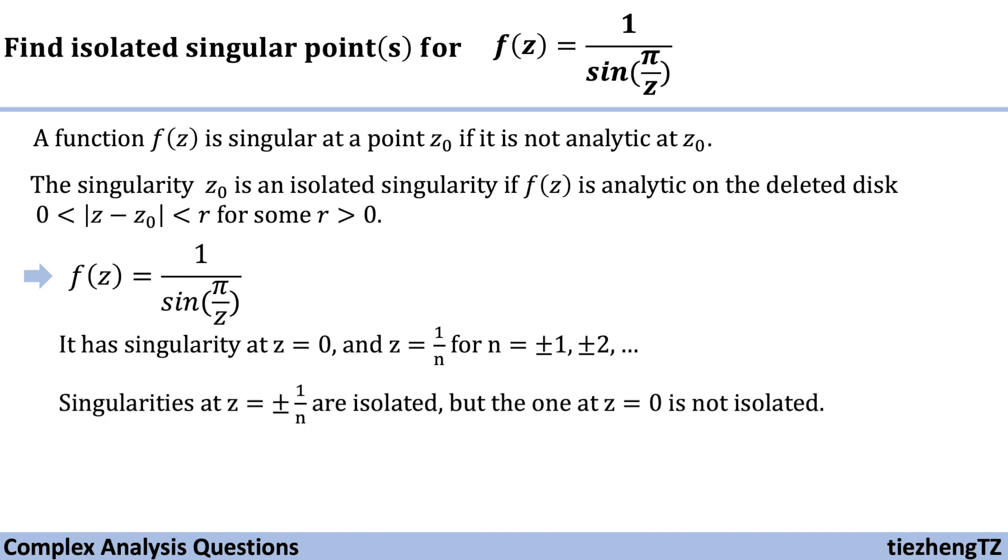We need to be careful. In this question, singularities at z equals ±1/n are isolated, but the one at z equals 0 is not.